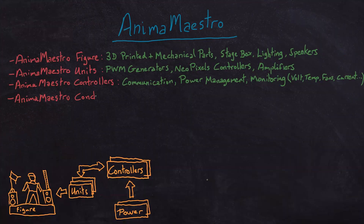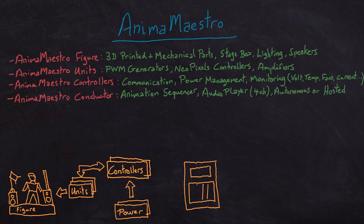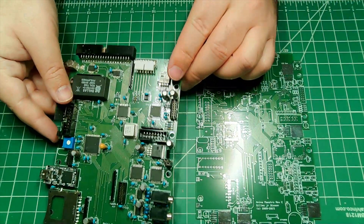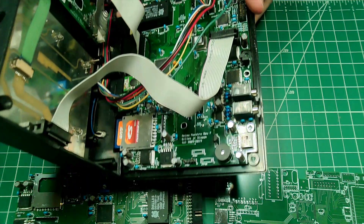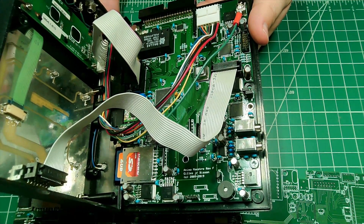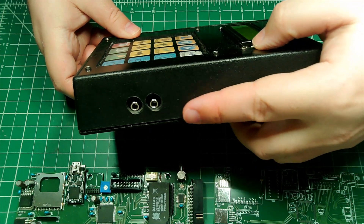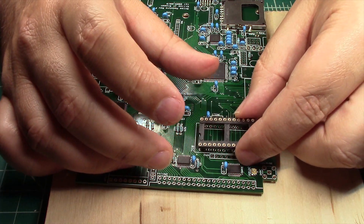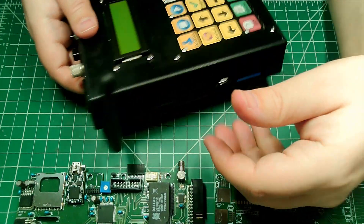The fourth series will be dedicated to the Anima Maestro Conductor — a small computer that connects to the primary controller and can manage animation playback autonomously, or can be connected to a host computer via USB. The conductor includes an LCD module, a matrix keyboard, a beeper, LEDs, an SD card for storing audio and animation data, two stereo DACs for four channels of high-quality audio playback, a real-time clock for scheduled animation playback, and an RF module for remote control operation.